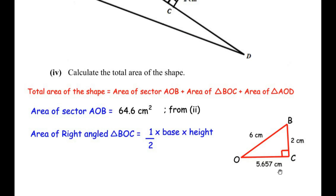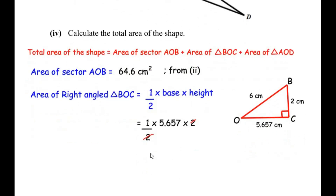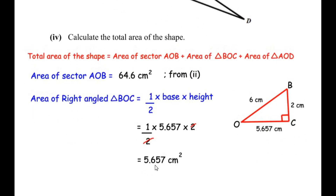Now focusing on right-angle triangle BOC: the formula is half times base times height. The base OC was found as 5.657 and the height is BC which is 2. Substituting: one half times 5.657 times 2. The two in the denominator and the two in the numerator cancel, giving 5.657 centimeters squared.